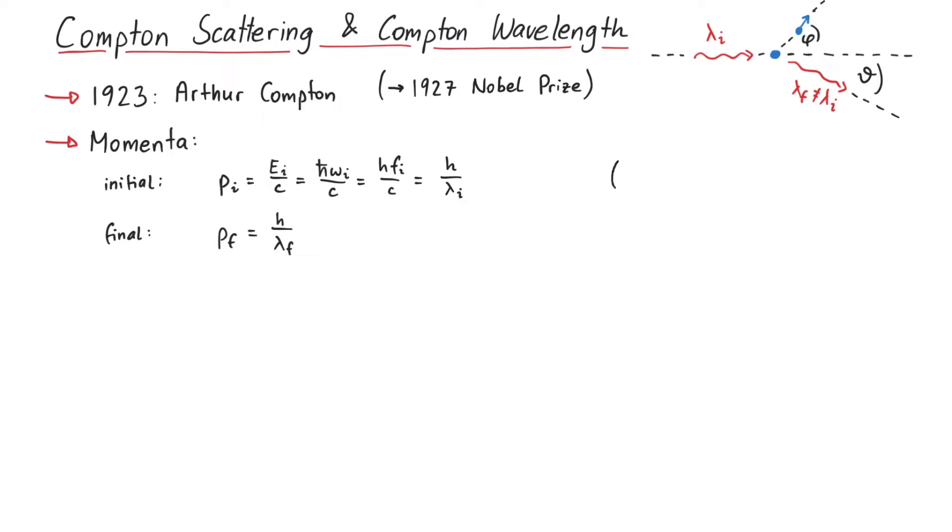As for the particle, initially it has zero momentum, since it is at rest. And after the collision, it has momentum p. Let us now use the equations of momentum conservation. This enables us to write the square of the particle's momentum using just quantities that we know. For instance, initial and final wavelength and scattering angle.